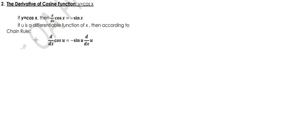Now let's look at the derivative of the cosine function. If y equals cosine x, then d/dx of cosine x is equal to negative sine x. The derivative of cosine x is negative sine x. Compare this to sine x, whose derivative is positive cosine x. If u is a differentiable function of x, then by the chain rule, the derivative of cosine u equals negative sine u times du.